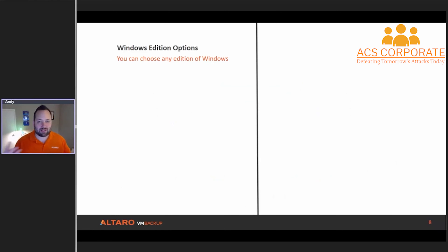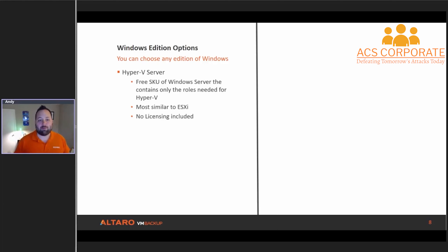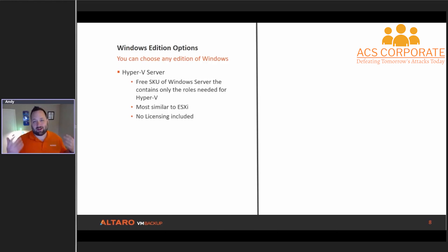Now let's talk about installation. This is one common area that a lot of people get hung up on. If you've worked with licensing in your vSphere environment, the left-hand column here is going to look very similar because you have similar concerns on the vSphere side. For Windows edition options — what edition of Windows are you going to use for your Hyper-V hosts? You can choose any edition. Starting with Hyper-V Server: this is actually a free SKU of Windows Server that contains just the roles needed for Hyper-V — Hyper-V itself, failover clustering, MPIO, and any other core feature required. It runs in Windows Server Core mode, which means no traditional UI — you have a command line and task manager.